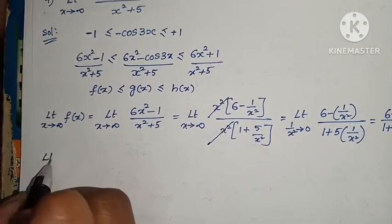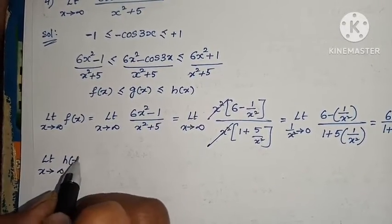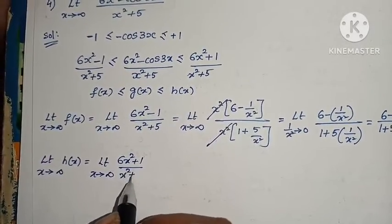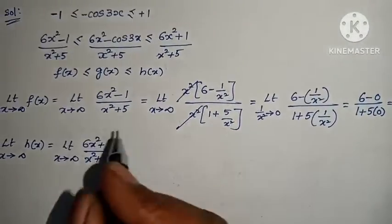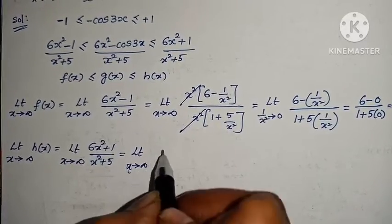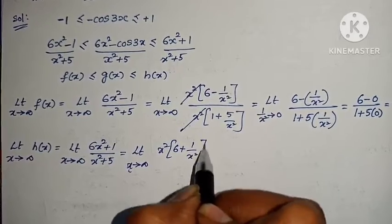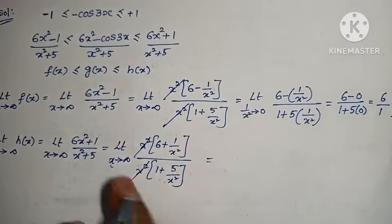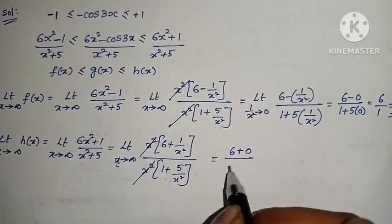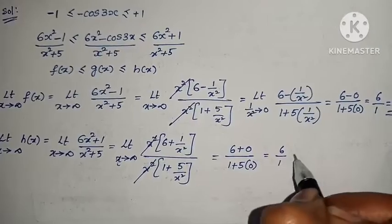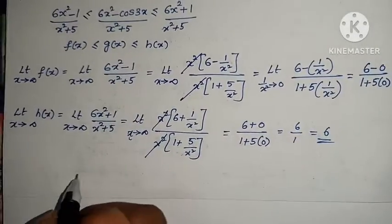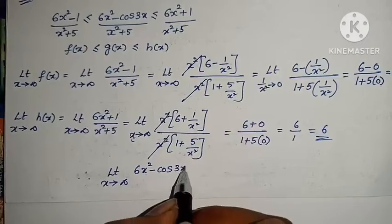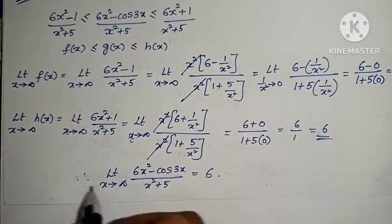Now limit x tends to infinity of h(x) = (6x² + 1)/(x² + 5). The only difference is plus instead of minus. Take x² common: (6 + 1/x²)/(1 + 5/x²). As x tends to infinity, 1/x² → 0: (6 + 0)/(1 + 0) = 6/1 = 6. So f(x) limit = 6 and h(x) limit = 6, therefore by the Sandwich theorem, limit x tends to infinity of (6x² - cos 3x)/(x² + 5) = 6.